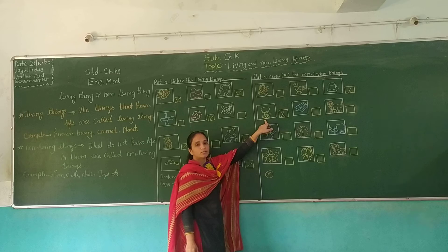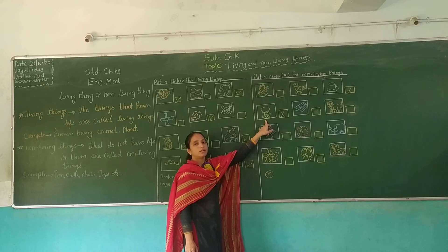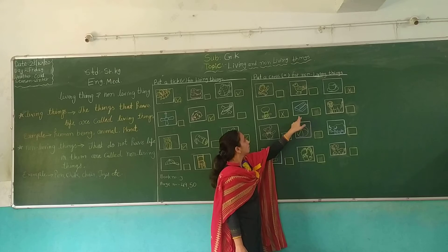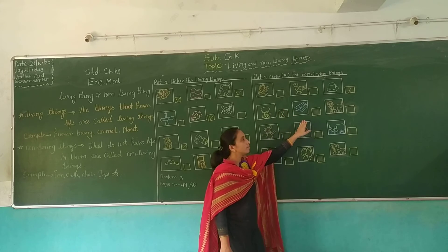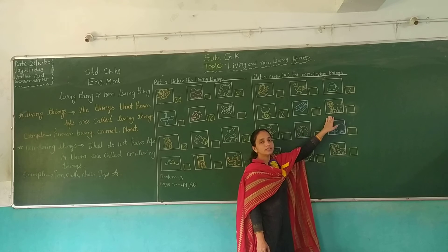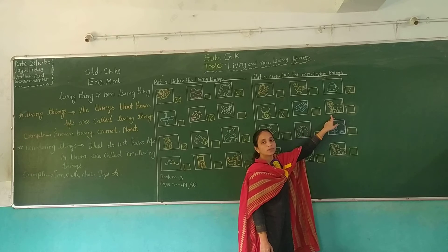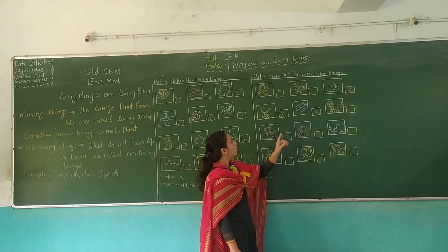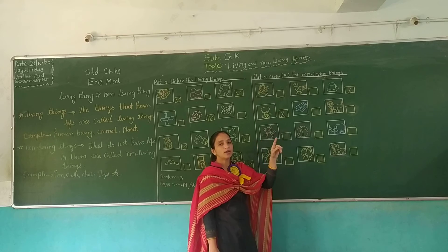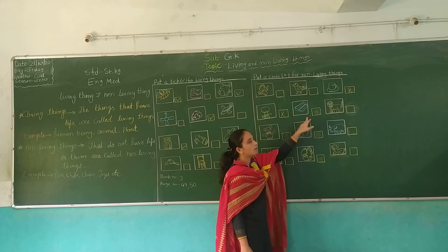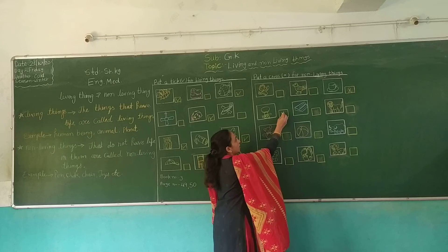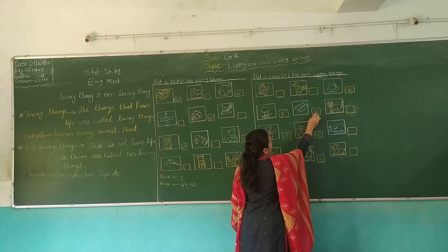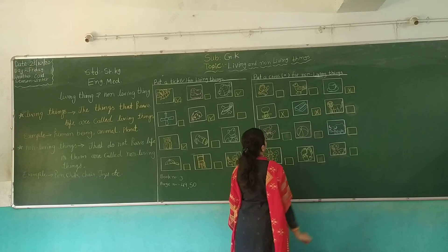And next, which picture is this? Table. Which picture is this? Compass box. Which picture is this? Lion. Lion is a living thing. Table and compass box are non-living things — put a cross in their boxes.